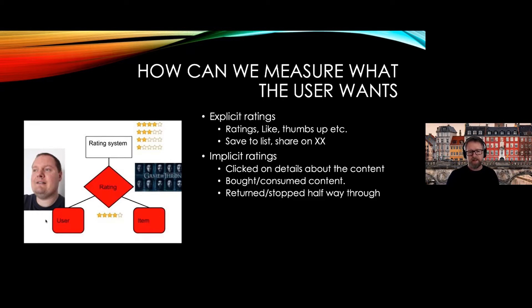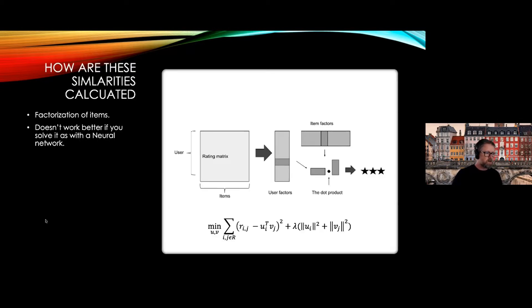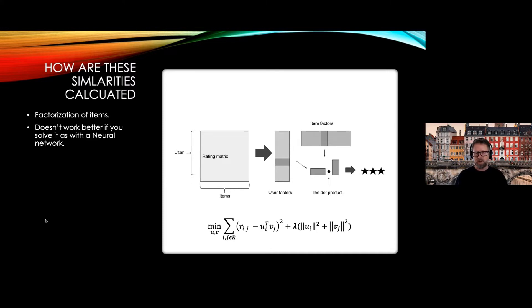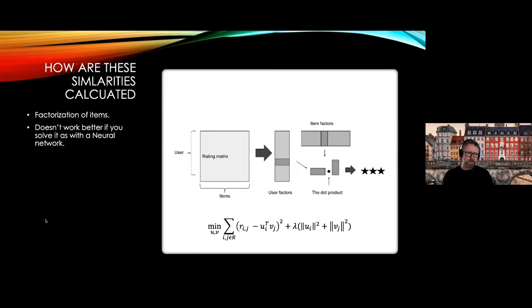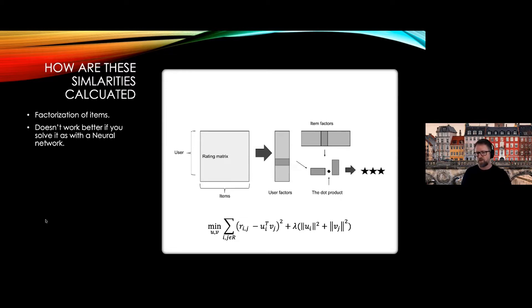Implicit can also be negative — someone returning something or stopping a movie halfway. When you have interactions between users and items, you create a rating matrix: a row for each user and a column for each item, with a number in the cell if the user interacted with that item. This is a very sparse matrix, and you want to condense the signal inside it by creating embeddings or user factors.